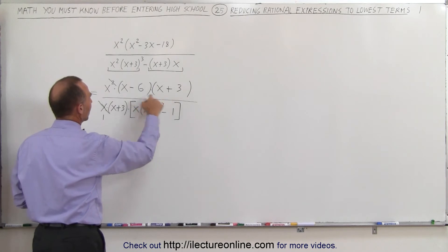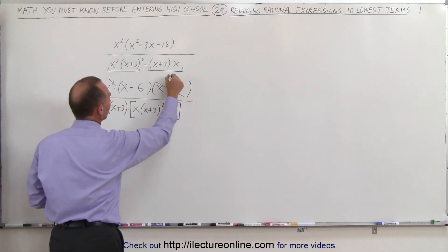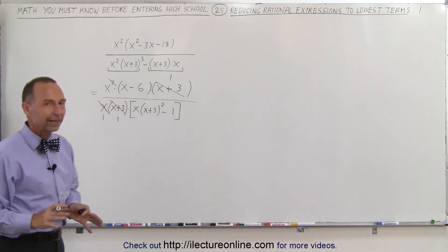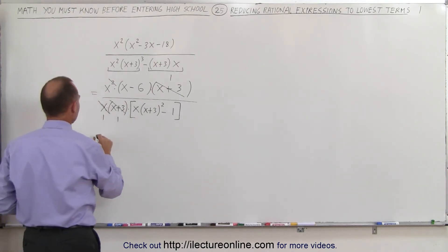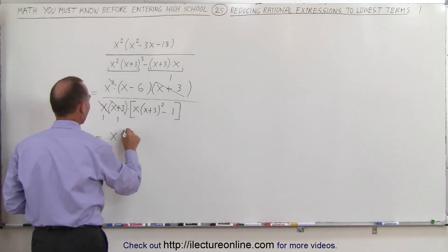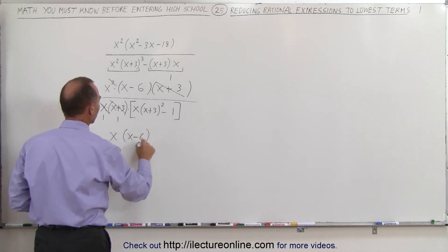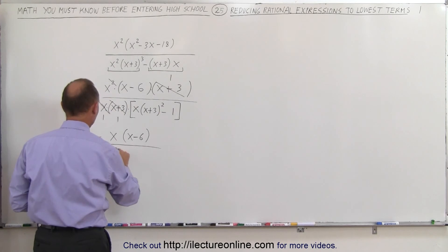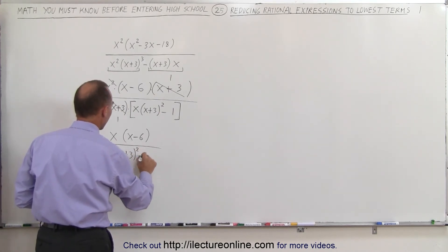Here I have an x plus 3 and an x plus 3. This cancels out, becomes a 1, and this cancels out, becomes a 1. So when I do that, I have the following remaining. I end up with an x times an x minus 6 in the numerator, and in the denominator I end up with what's over here, which is an x times an x plus 3 quantity squared minus 1.